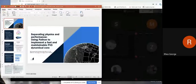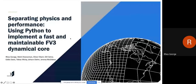The last talk of the session is by Ria on separating physics and performance using Python to implement a fast and maintainable FV3 dynamical core. I work with Mark Chessman at Vulcan. You've been introduced to our effort to run FV3 climate simulations at high resolution — Mark discussed performance and running the model using Docker, and I'm going to elaborate on the code we run using that approach. I'll share how we wrote the FV3 dynamical core in a way that can be fast on multiple hardware architectures and easy to maintain.